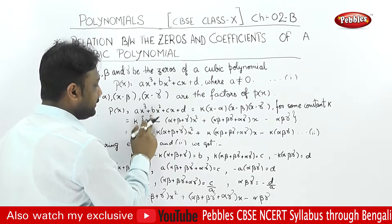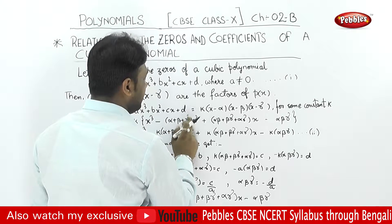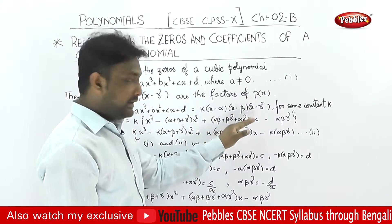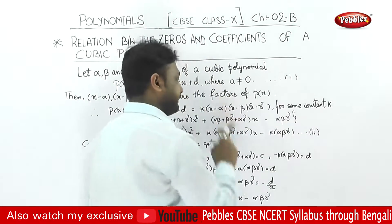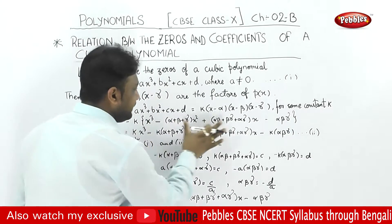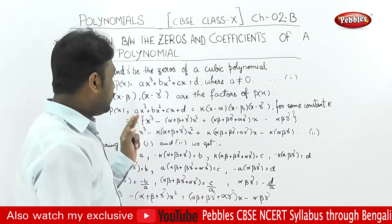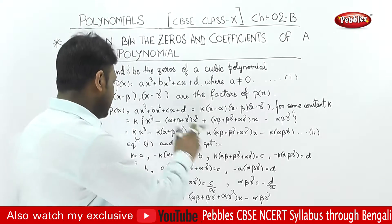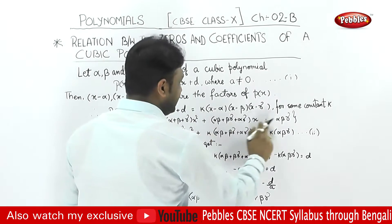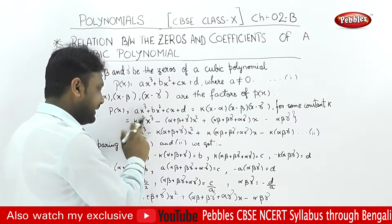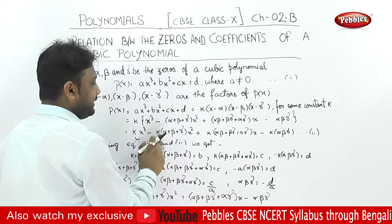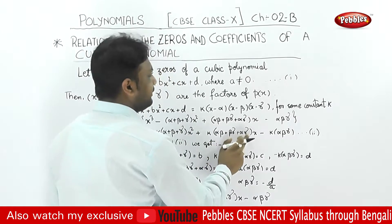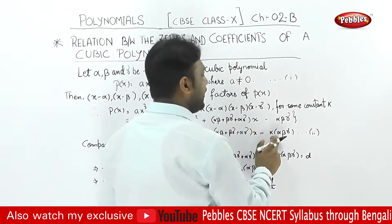Expanding the factored form: P of x equals to k times x cube minus (alpha plus beta plus gamma) times x square plus (alpha beta plus beta gamma plus alpha gamma) times x minus alpha times beta times gamma.